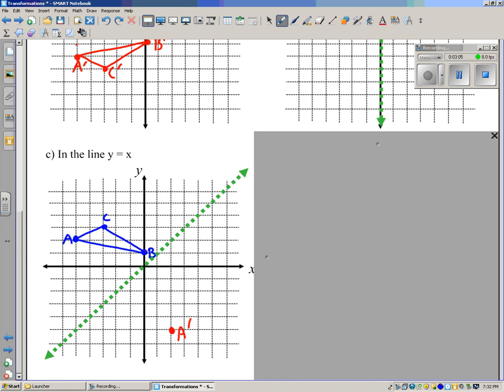B prime, notice how B is just half a box away. So B prime is just going to be half a box away. And if you count it, C is going to be three boxes away. So C prime will be one, two, three, right here. And then, let me get rid of this line here so I can connect the vertices. And then you just connect your vertices to make your image.